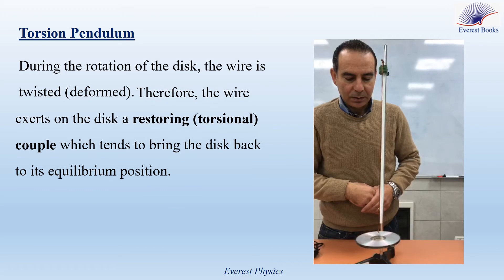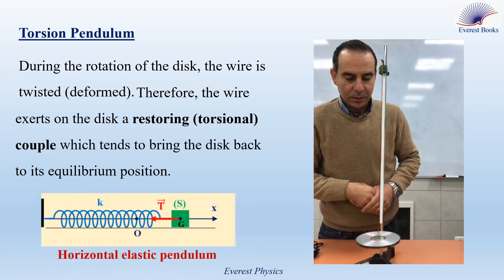During the rotation of the disc, the wire or torsion wire is twisted or deformed. Then the wire exerts on the disc a restoring torsional couple which tends to bring the disc back to its equilibrium position. We can make an analogy between the torsion pendulum and the horizontal elastic pendulum. In the horizontal elastic pendulum, when the spring is deformed, it exerts a restoring force on the block, tending to bring it back to equilibrium. Similarly, in the torsion pendulum, when the wire is twisted, it exerts a restoring couple on the object.